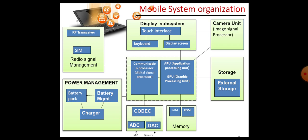What are the components of radio signal management? A SIM — what is the abbreviation of SIM? A SIM stands for subscriber identification module — along with an RF transceiver. RF means radio frequency. A transceiver is the combination of a transmitter and receiver. So, the communication processor is connected with a SIM, and the SIM is connected with an RF transceiver.